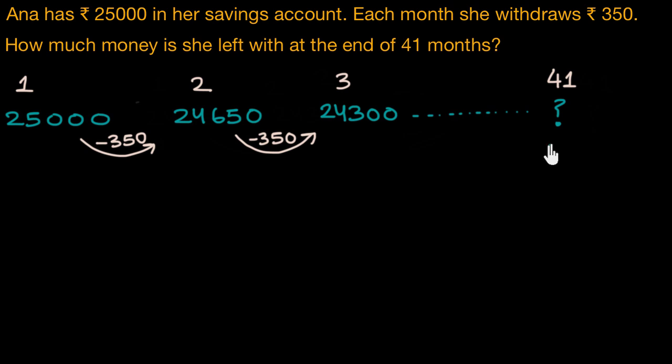Now, one way to go about it is, we can keep on subtracting Rs. 350 from each month's remaining amount for 41 times. And we'll eventually get there. But imagine, what if we had to figure out how much money would Anna have by the end of 500th month? I'm assuming she would have none. But even then, this seems like a little bit of hassle.